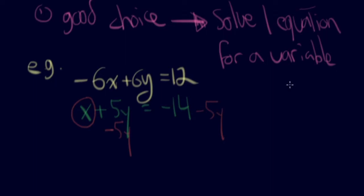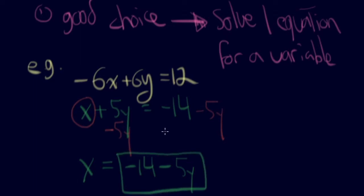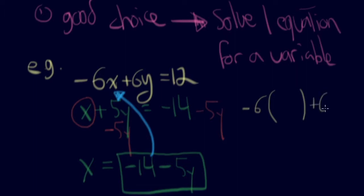In order to do that, I'm just going to subtract 5y from both sides. My new equation is going to be x equals negative 14 minus 5y. Wherever I see x in the other equation, I'm going to substitute that in. So I go and find x in the other equation and substitute this in for that value. So what you end up getting is negative 6 times that — negative 14 minus 5y — plus 6y equals 12.